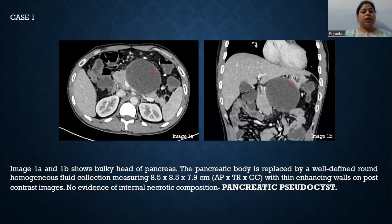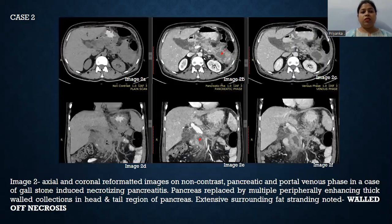The first case shows a bulky head of pancreas. The pancreatic body is replaced by a well-defined, round, homogeneous fluid collection with a thin enhancing wall on post-contrast images. There is no evidence of any internal necrotic composition, suggestive of pancreatic pseudocyst.